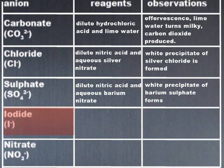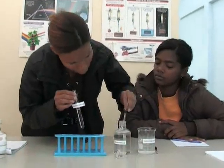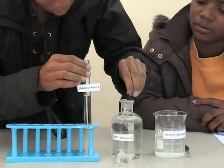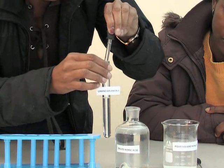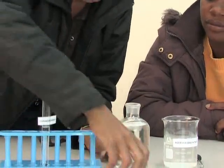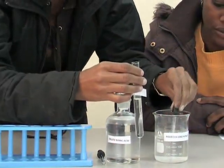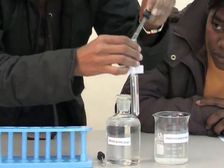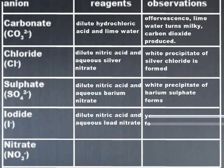Now we are going to test for iodide. We will again need to add dilute nitric acid and aqueous lead nitrate. To this unknown solution, I will add a few drops of dilute nitric acid, and then a few drops of aqueous lead nitrate. A yellow precipitate is formed. The yellow precipitate confirms the presence of iodide.